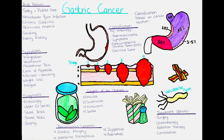Another classification system for stomach cancer is based on the histological type of the tumor, which refers to the appearance of the cancer cells under a microscope. The main histological types are: adenocarcinoma, the most common type accounting for over 90% of all cases, arising from the glandular cells in the stomach lining; lymphoma, a rare type developing in the lymphatic tissue of the stomach; gastrointestinal stromal tumor, a rare type arising from the connective tissue; and carcinoid tumor, a rare type arising from the hormone-producing cells in the stomach.